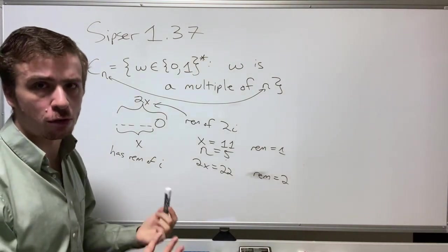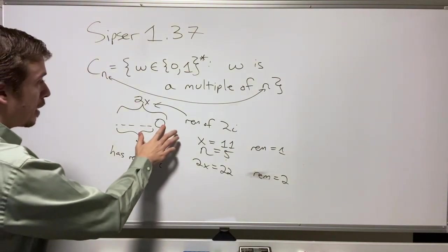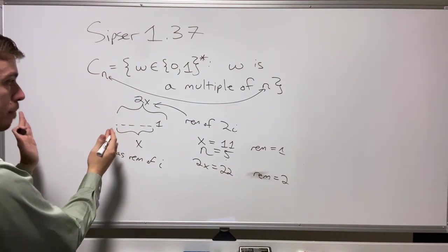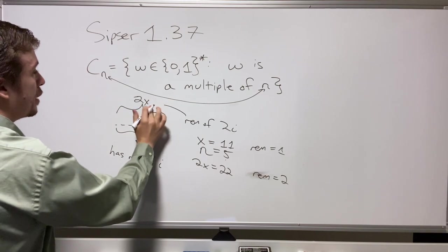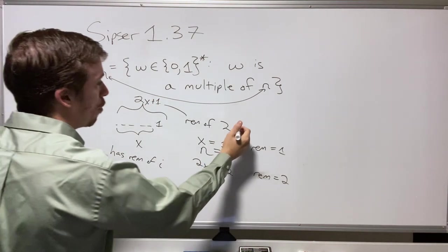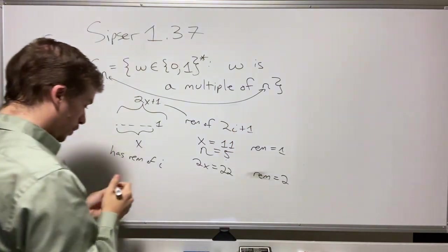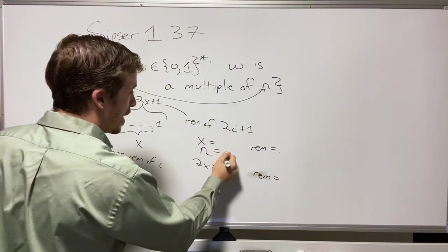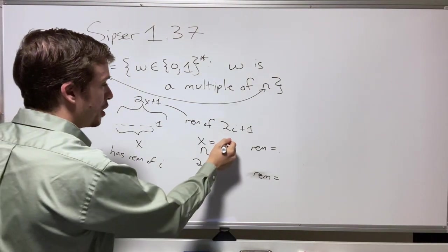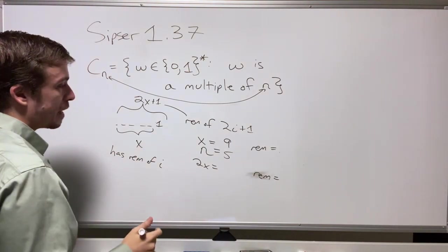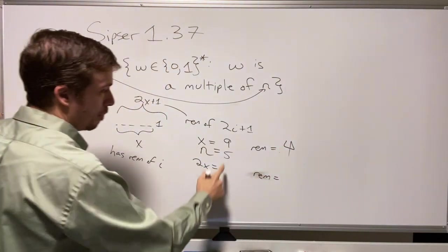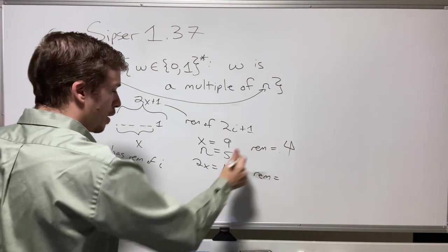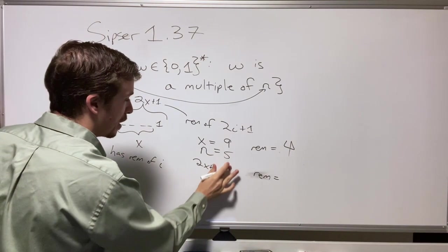If we read a 1 after the fact, that corresponds to shifting the number over one position and adding a 1, so the new number is 2x plus 1 and the remainder is 2i plus 1. Let's do another example: n equals 5, x equals 9, and we read a 1. The remainder of 9 mod 5 is 4, and 2x plus 1 is 19.